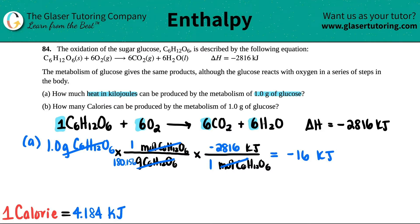So this just depends on what your teacher or professor wants. How much heat can be produced? 16 kilojoules can be produced. Remember, there's no such thing as a negative amount of energy. The negative just references that it's being released.